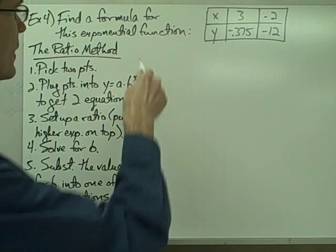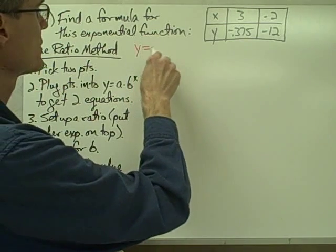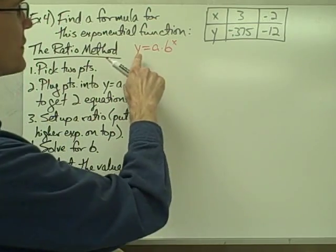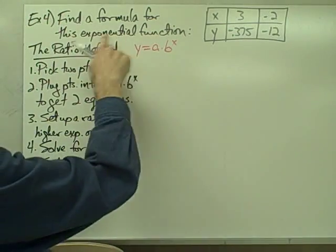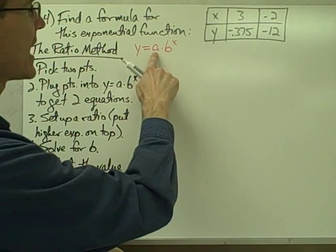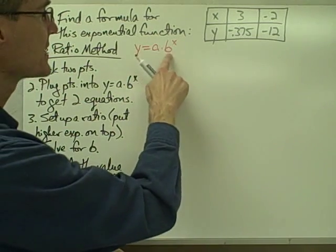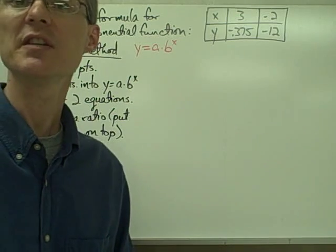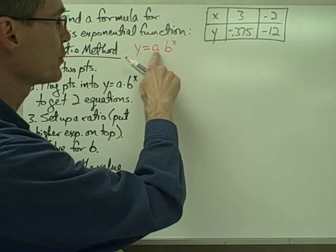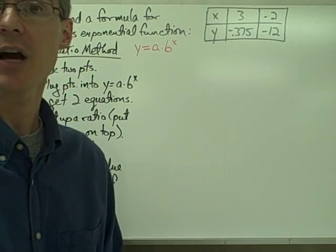Remember that what we're trying to come up with is a formula in this form. We know it's an exponential function because we're told that at the beginning of the problem, so we know it has this form: y equals a times b to the x. Since a and b are our parameters, we just need to figure out what are the values of a and b, and once we know what a and b are, then we'll have our formula.